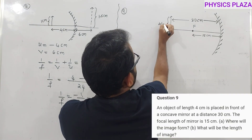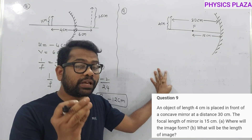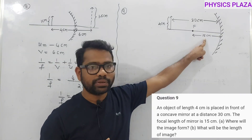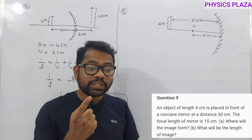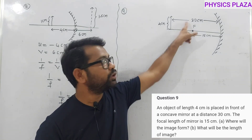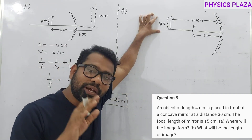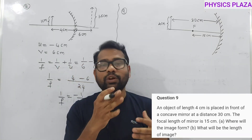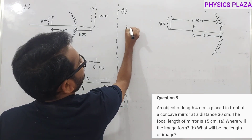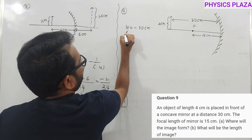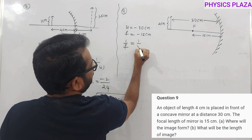Ninth numerical: concave mirror of focal length 15 cm, object height 4 cm, placed at 30 cm. Since focal length is 15 cm, radius of curvature R = 30 cm, meaning the object is placed exactly at the center of curvature. So we expect the image to also form at 30 cm with the same height of 4 cm. Let us verify mathematically: u = −30 cm, f = −15 cm.